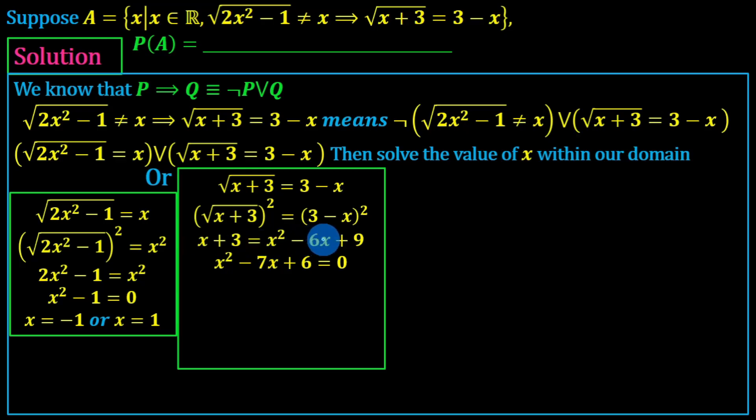x plus 3 is equal to 9 minus 6x plus x squared. x squared minus 6x minus x plus 6 is equal to 0. x squared minus 7x plus 6 equals 0. So this is minus 6 and minus 1.